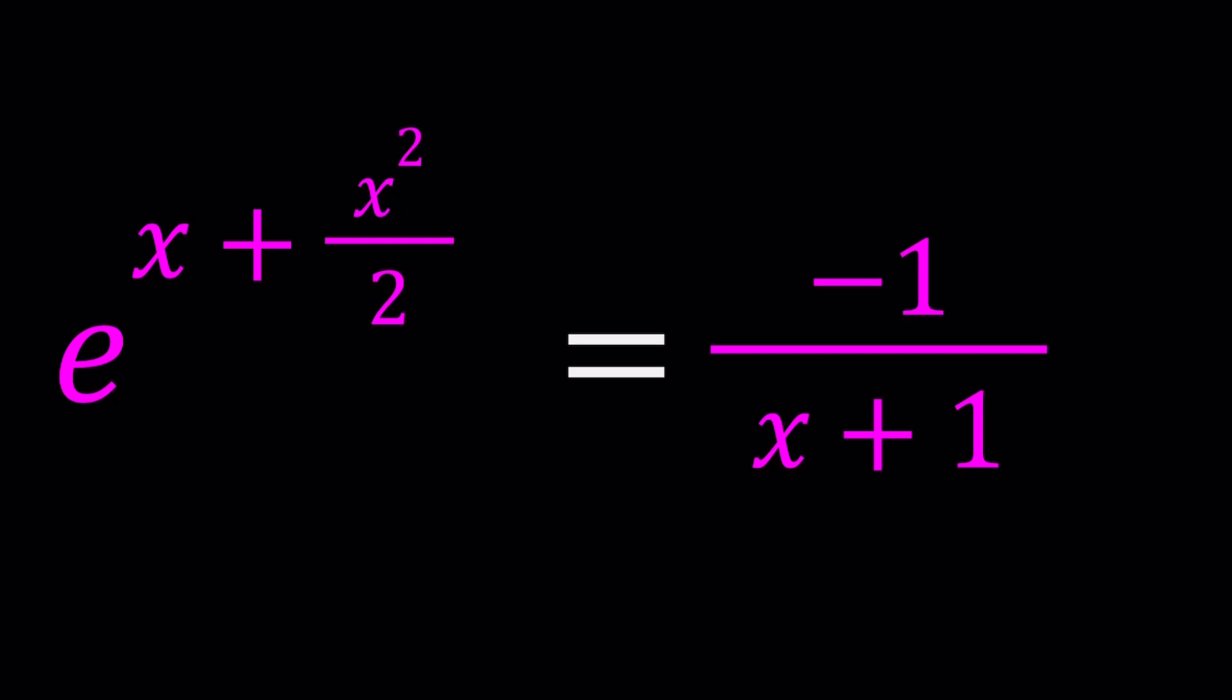We have e to the power x plus x squared over 2 equals negative 1 over x plus 1. And we're going to be solving for x values.